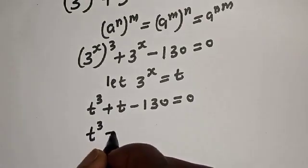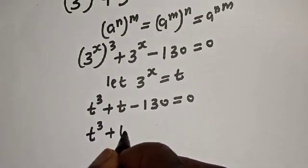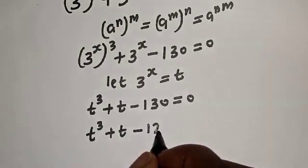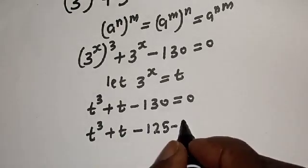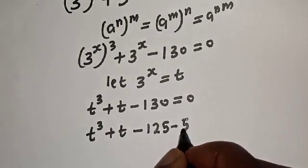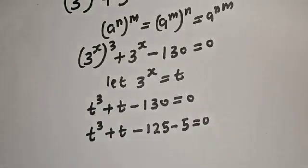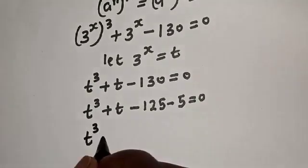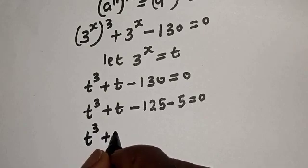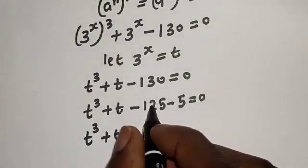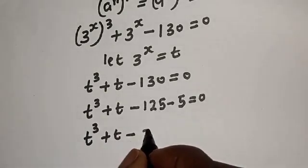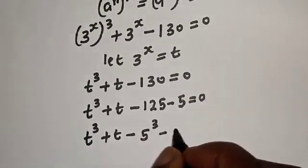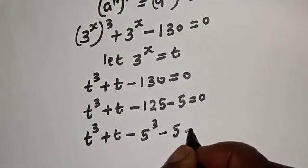130 can be written as 125 plus 5, so t raised to power 3 plus t minus 125 minus 5 is equal to zero. This is t raised to power 3 minus 125, plus t minus 5 is equal to zero.